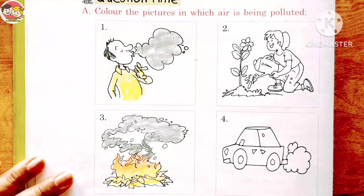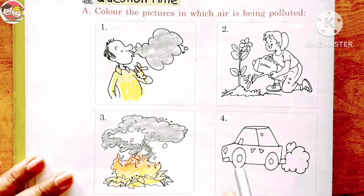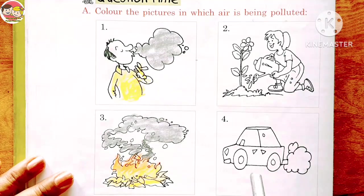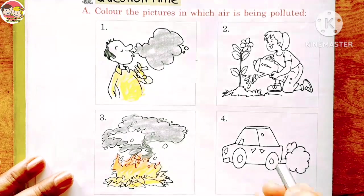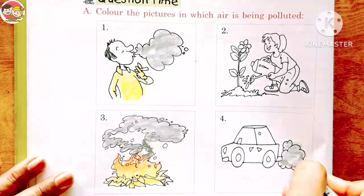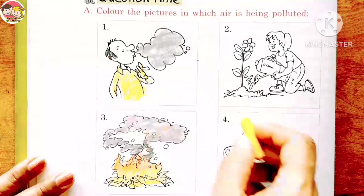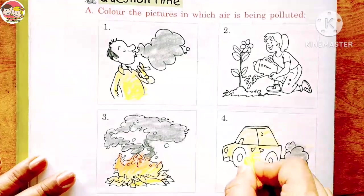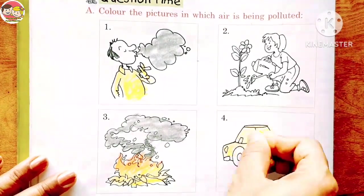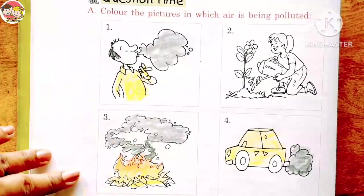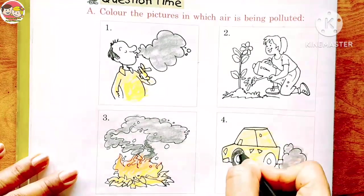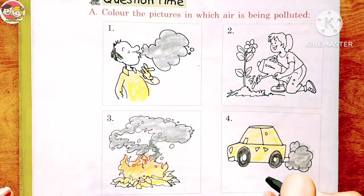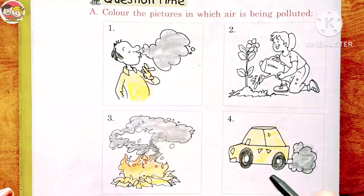Now look at the last picture: a car is releasing harmful smoke and gases, which is one of the main causes of air pollution. So we need to color this picture. These are all different causes of air pollution.